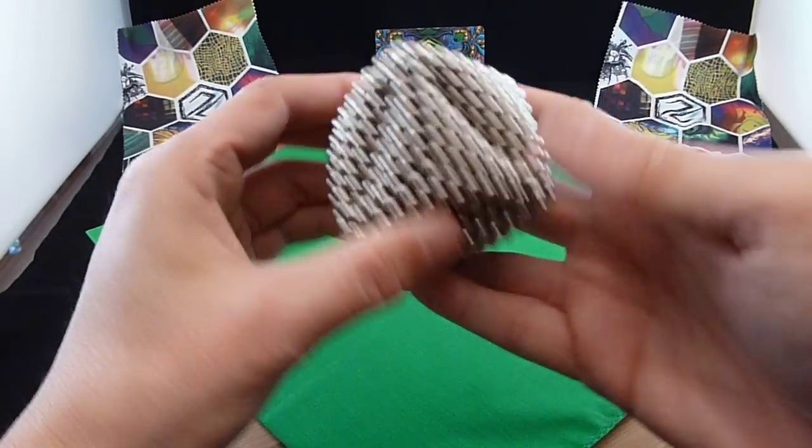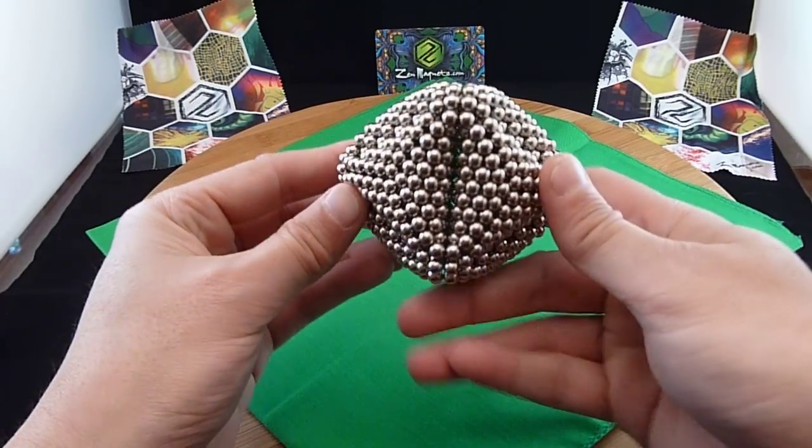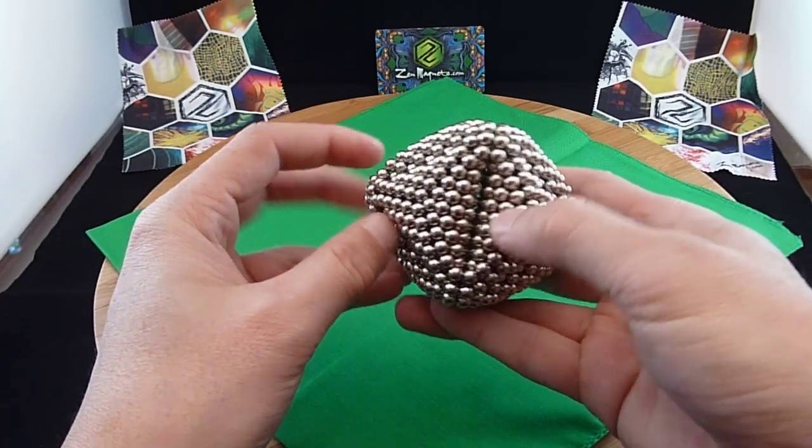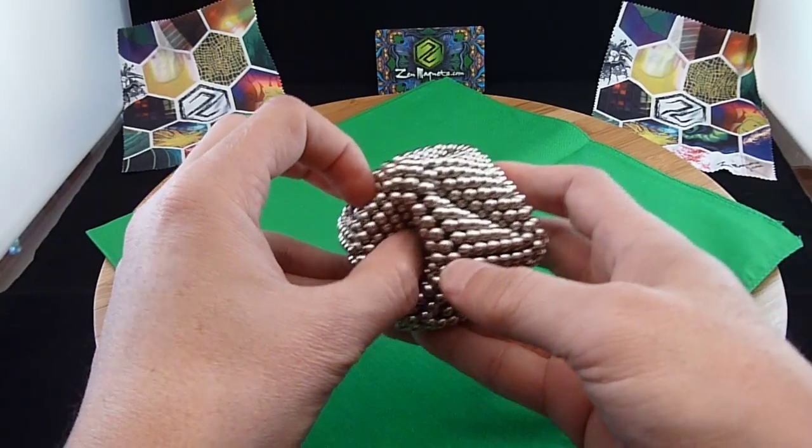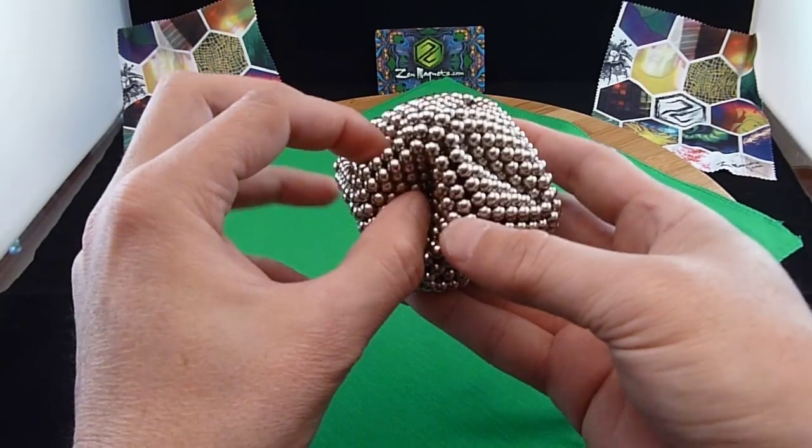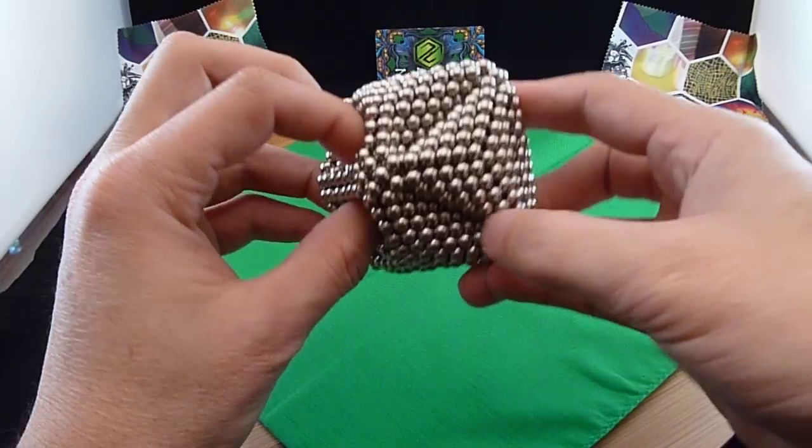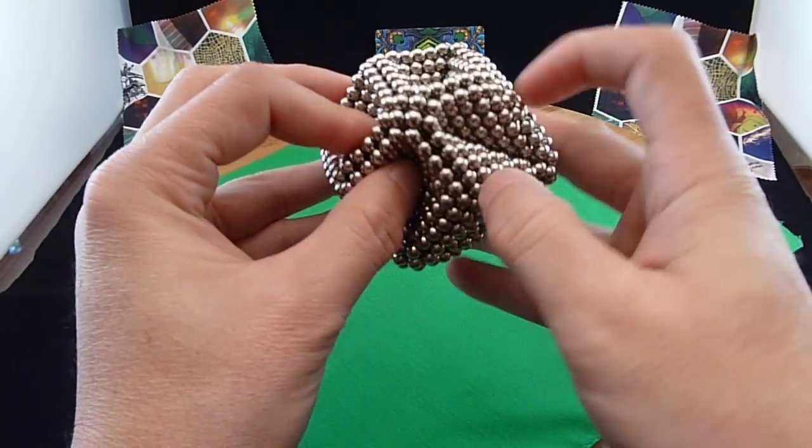All right. There is the dork ball. Now the interesting thing about this, is you see these gaps here, you can actually just stick your thumb in there and push them in. So you can modify the shape of it once you've got it made together.